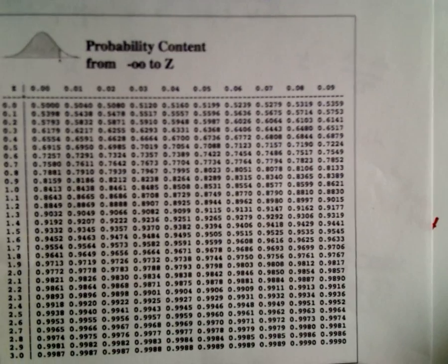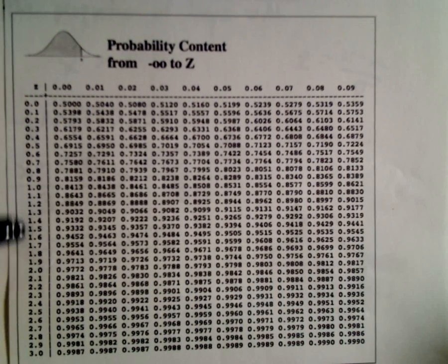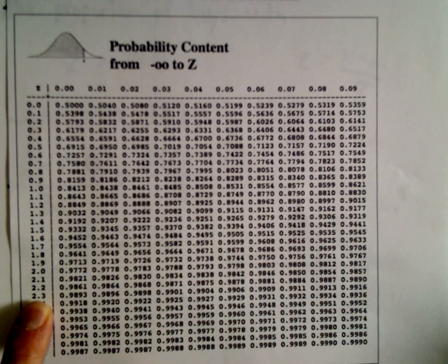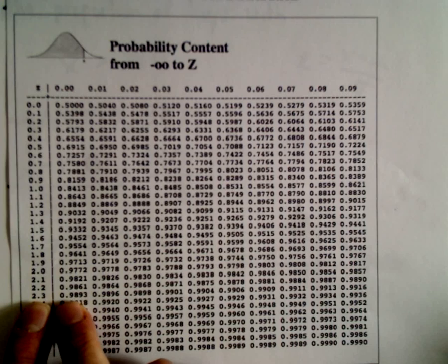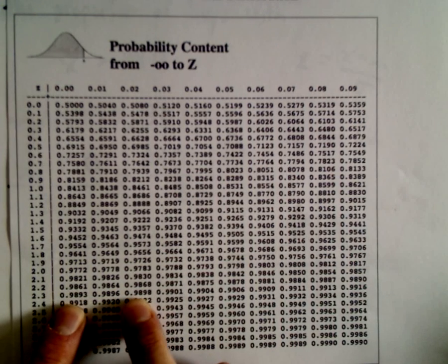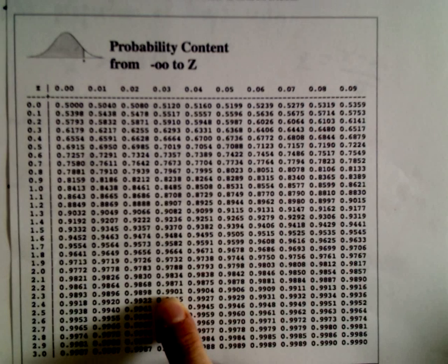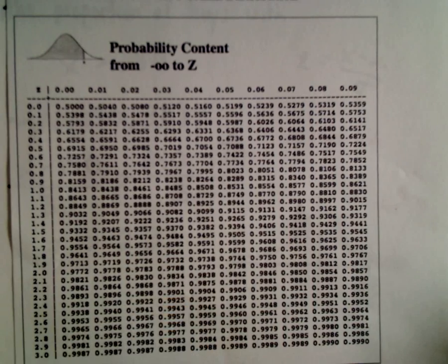First off, let's find 2.33. The first thing I do is I find 2.3 on the left side. So there's 2.3. And now I've got to find 2.33. So there's 2.30, 2.31, 2.32, 2.33. Hopefully you can read that. That says 0.9901.